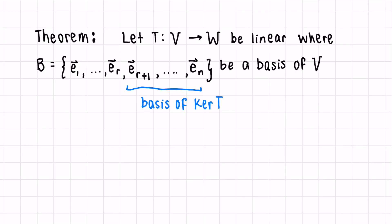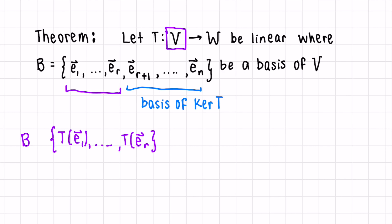What happens if the basis of our domain contains the kernel of the transformation — meaning the vectors that go straight to the zero vector in the codomain? This is a special case where if we transform the remaining vectors, we can find the basis of the image of the transformation. Here R represents the rank of the transformation, or the number of leading ones, which corresponds to the number of elements in the basis of our image.